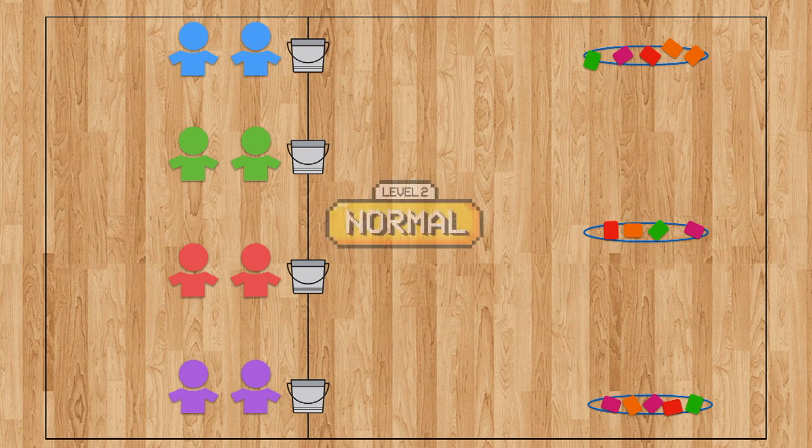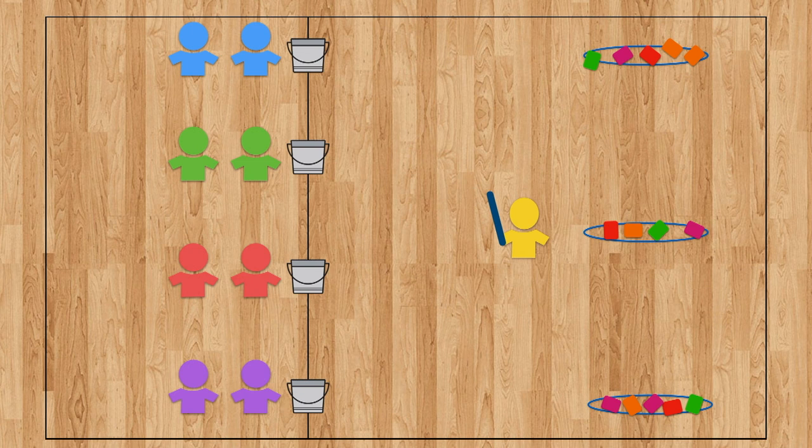In round two things are going to get a little harder. In this round you're going to select one student to be the guard and you're going to hand them the pool noodle. The guard's job is to protect the treasure by running around and tagging any incoming players. When the round starts, the same rules apply as they did in round one.